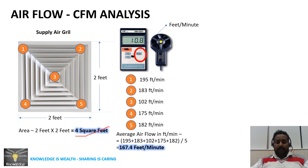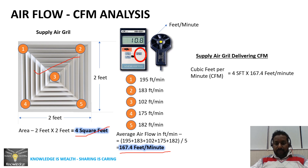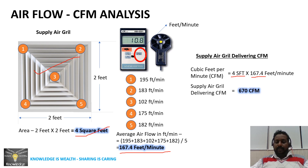Now we calculate CFM. Supply grill delivered CFM = area in square feet × airflow in feet per minute. We have 4 square feet area and an average airflow of 167.4 feet per minute. Multiplying area by airflow gives us CFM, so this supply air grill is delivering approximately 670 CFM.